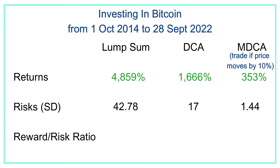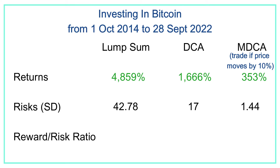With Time-Based DCA, where you're investing $100 every month, the volatility of your returns would be reduced from about 43% to 17%, and that is a huge difference. Furthermore, with Movement-Based DCA, your volatility would be reduced even more, down to about 1.4%.